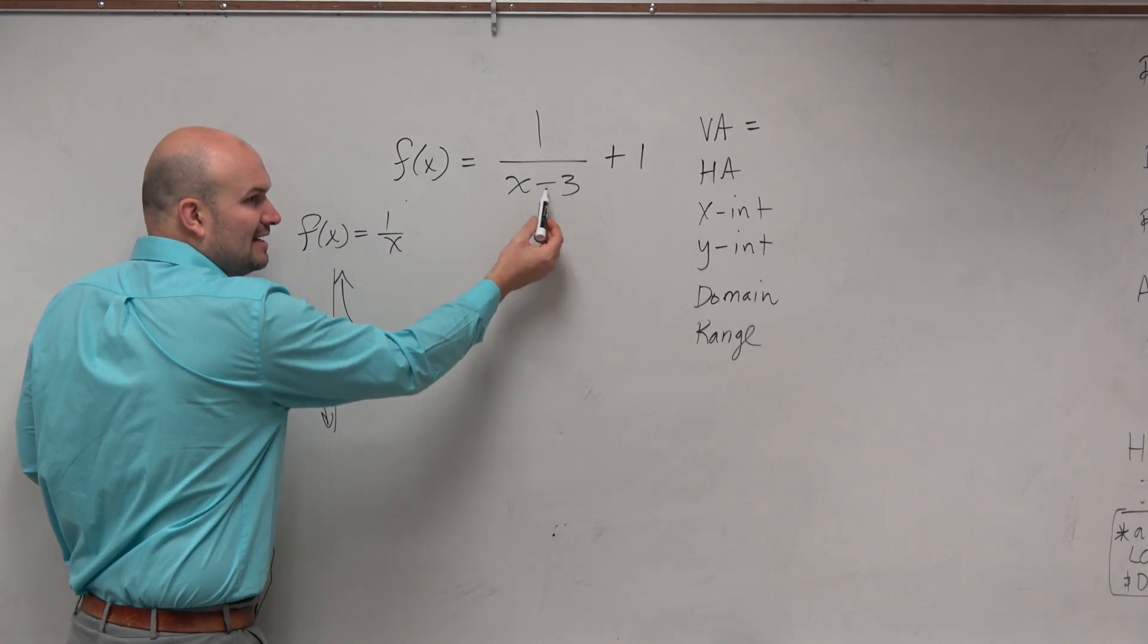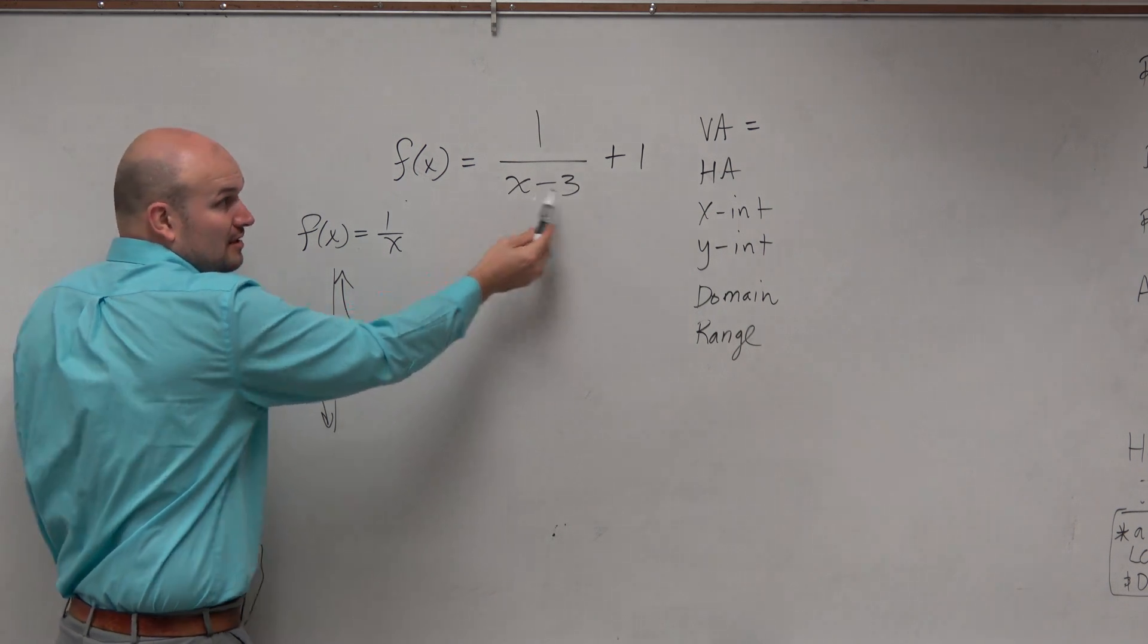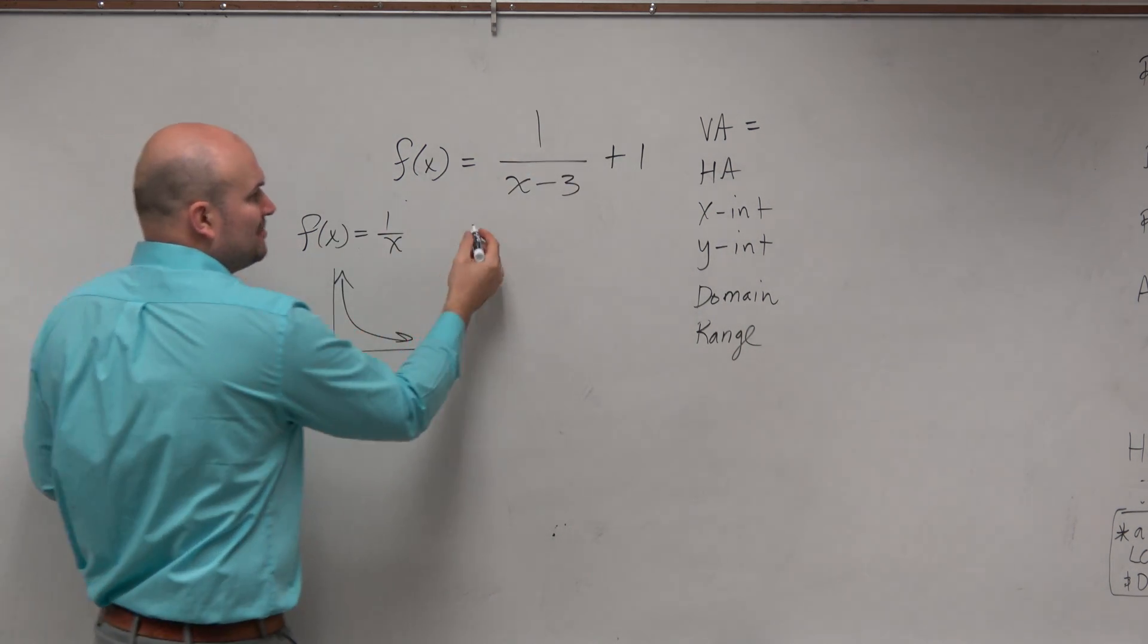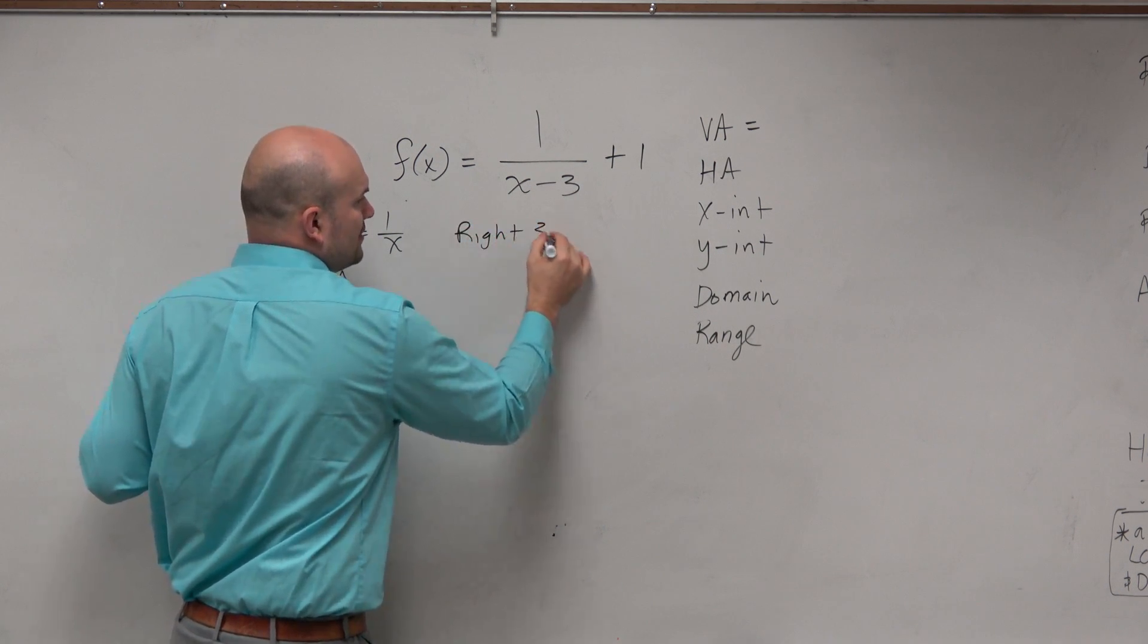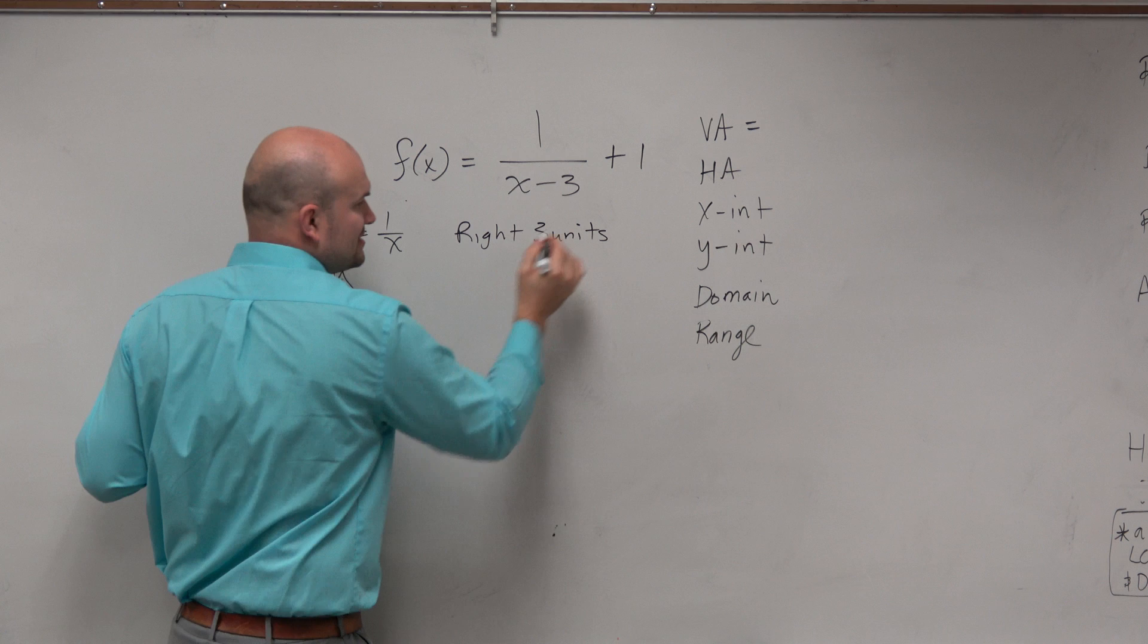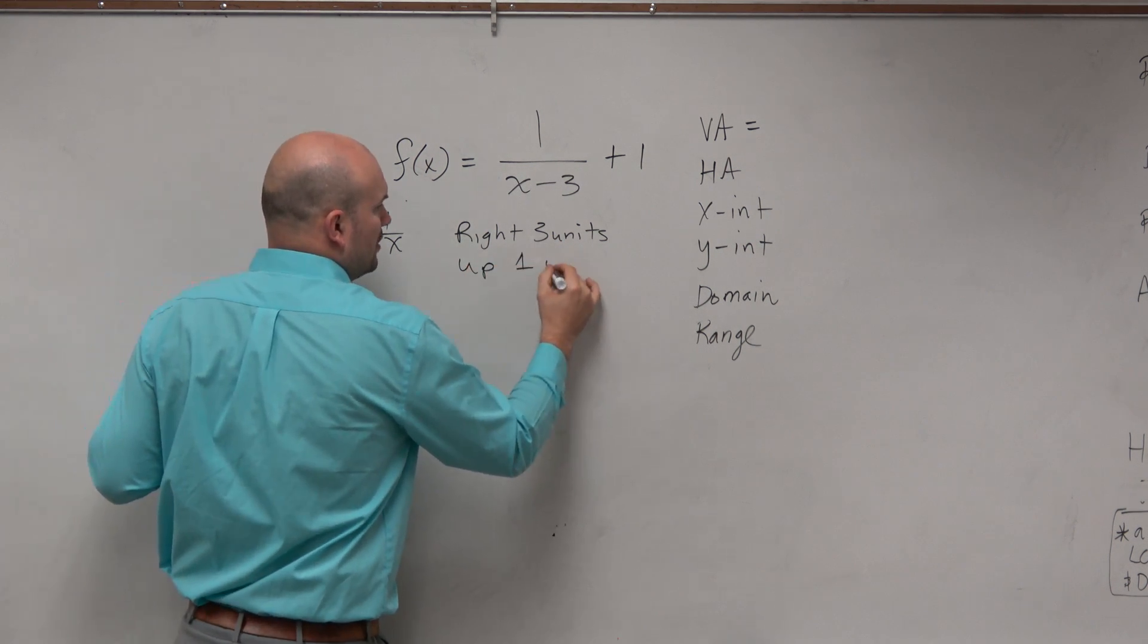I think you guys can agree that the function is 1 over x. Therefore, the minus 3 is inside of the function, and the 1 is outside of the function. Now this isn't what I asked, but I'm just going to write it in here. You are shifting the graph right 3 units. Sometimes I write this down just to make sure I'm doing this correctly. And then up 1 unit.